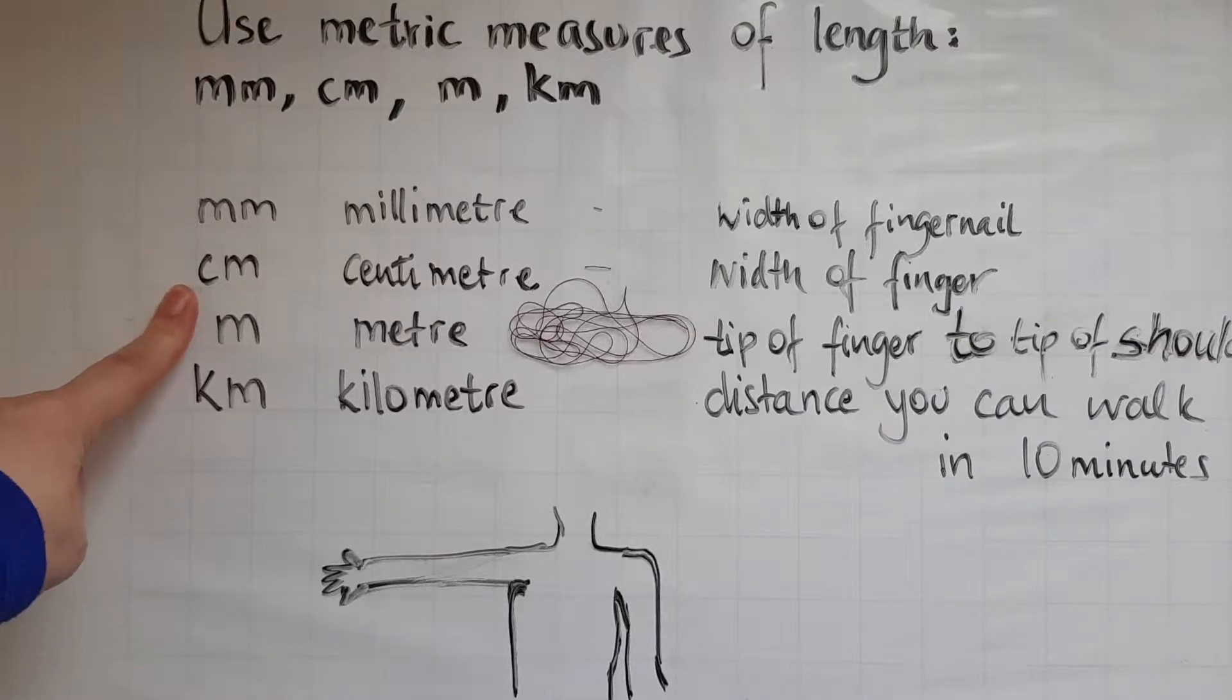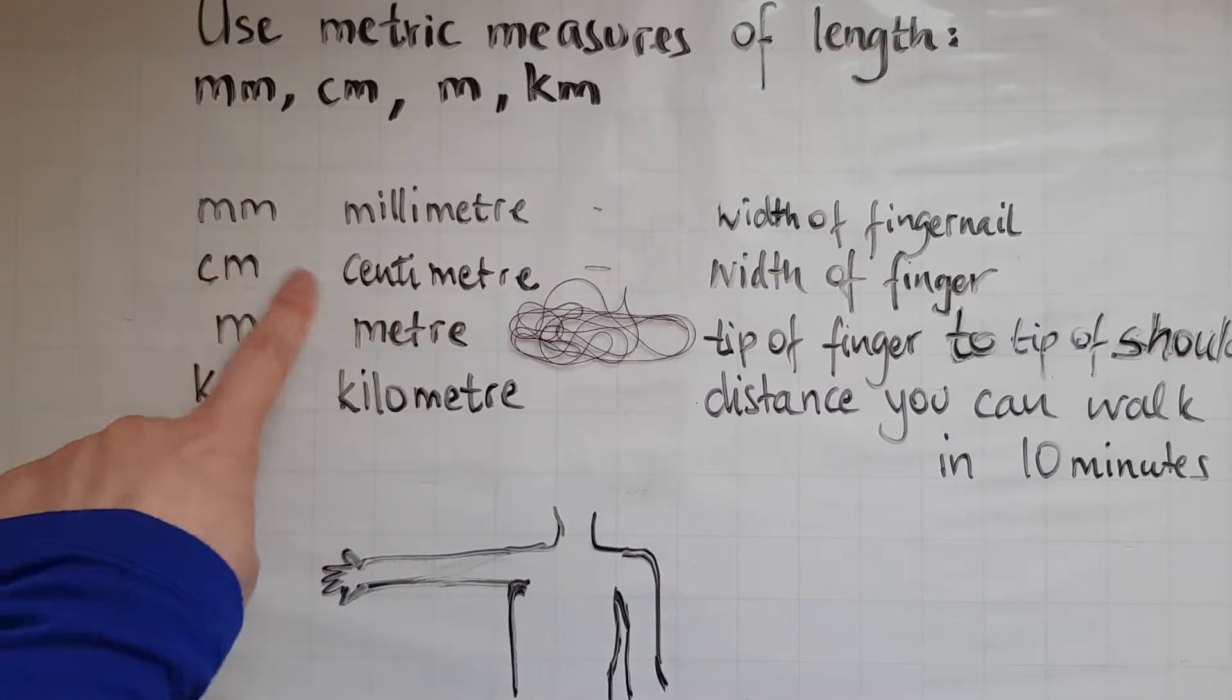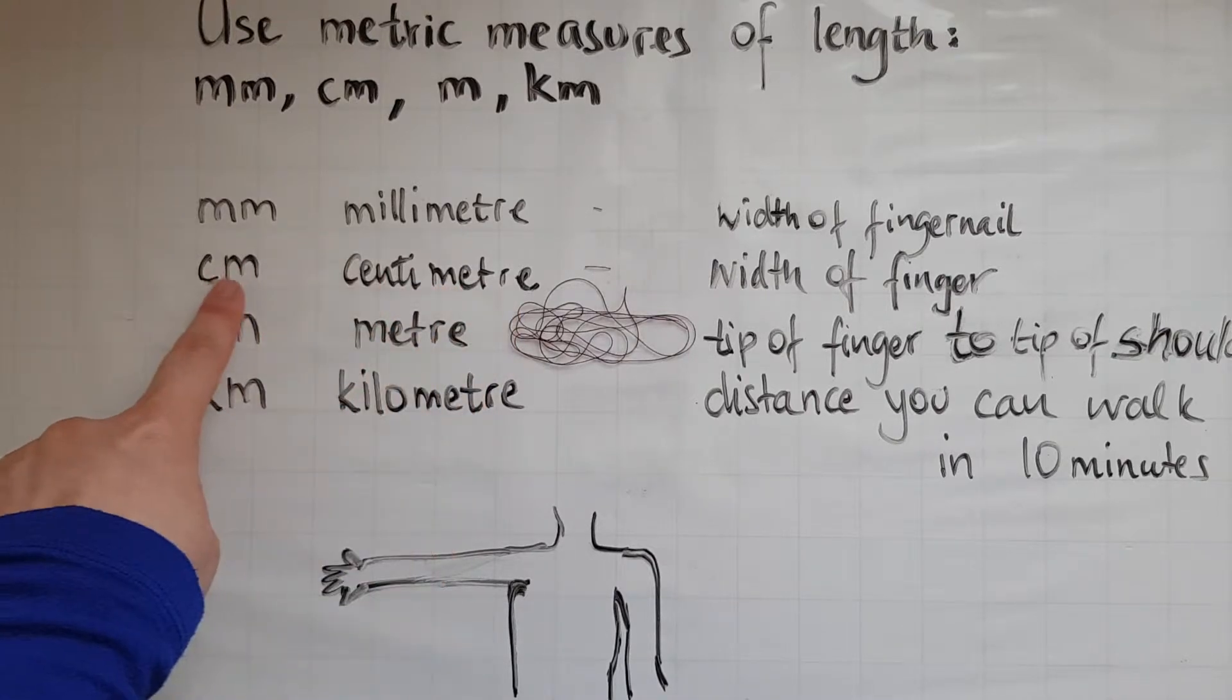Centimeter - that's the short form and that's the long. So cm is for centimeter and m is for meter.